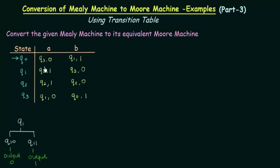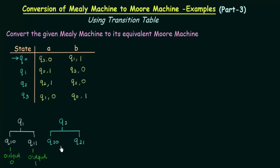Let's check state q2. In this column we see that q2 is giving output 1 and in this column it is giving output 0. So q2 is also giving two different kinds of outputs, so I have to split state q2 as well. I will split q2 into two states: q20 and q21. q20 will be used for output 0 and q21 will be used for output 1.